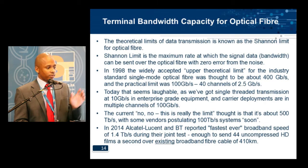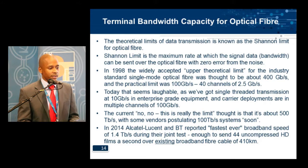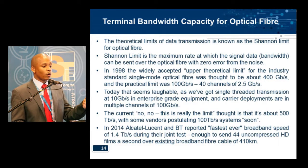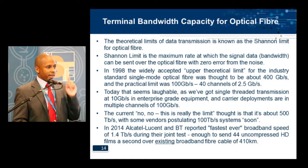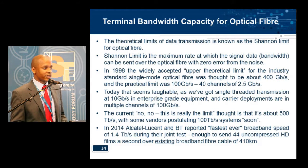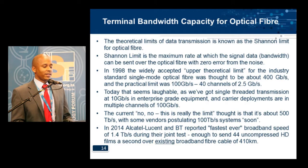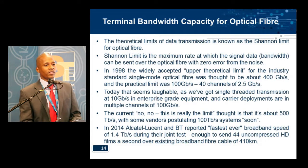The theoretical limit of data transmission is known as the Shannon limit for optical fiber. Basically, it's the maximum rate at which a signal — which is the bandwidth — can be transmitted over optical fiber with zero error from noise. In 1998, the widely accepted upper theoretical limit for industry-standard single mode optical fiber was thought to be about 400 gigabits per second, and the practical limit was about 100 gigabits — using 40 channels of fiber, each operating at 2.5 gigabits per second.